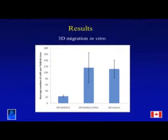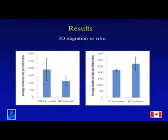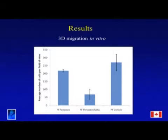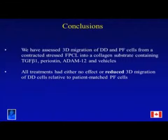Another molecule we looked at was periostin, at a physiologically relevant concentration — again, a matricellular molecule. It had no significant statistical effect on migration in either PF or DD cells. It does make PF cells grow but not DD cells; it makes Dupuytren's disease cells differentiate into myofibroblasts. With mitomycin C treatment, when you stop the cells from growing, it actually inhibits their migration. Overall, we saw no effect or reduced 3D migration of Dupuytren's disease cells compared to primary palmar fascia controls.